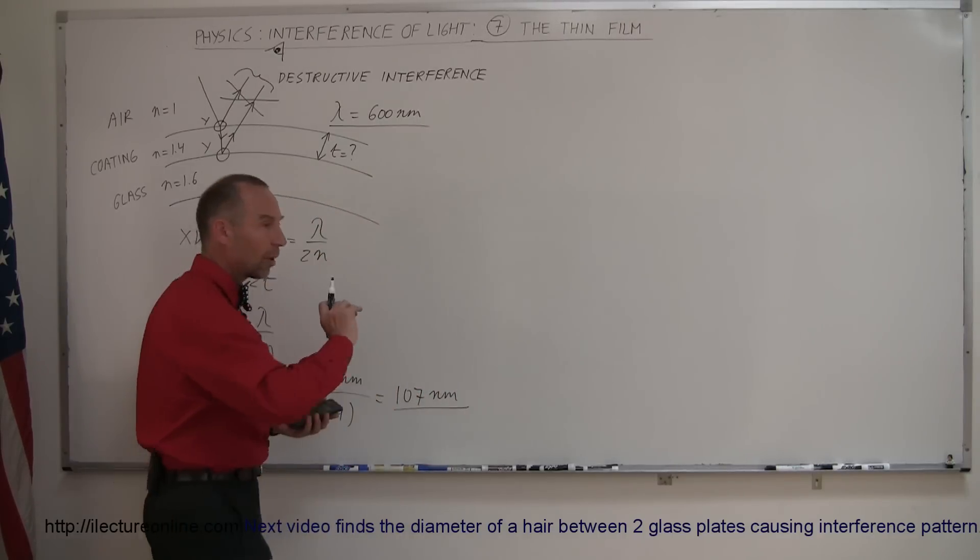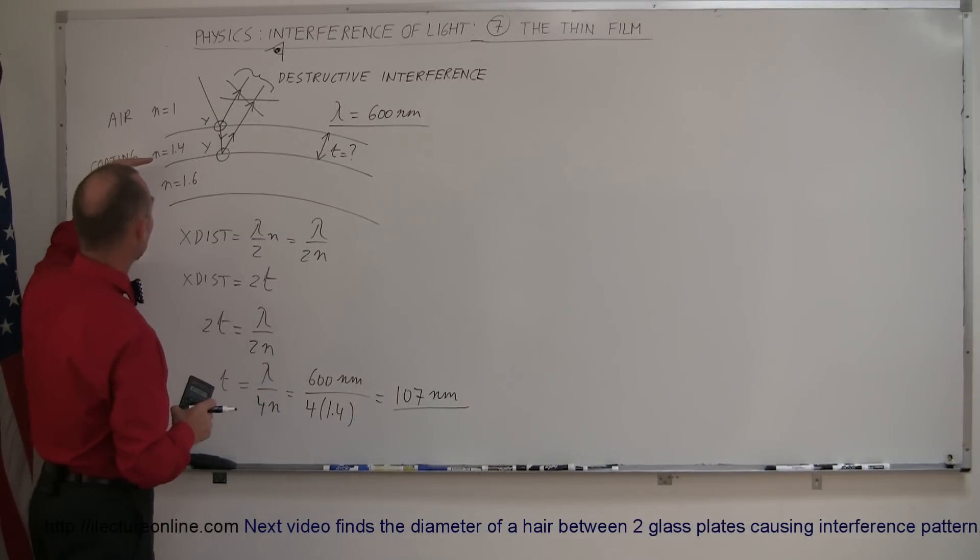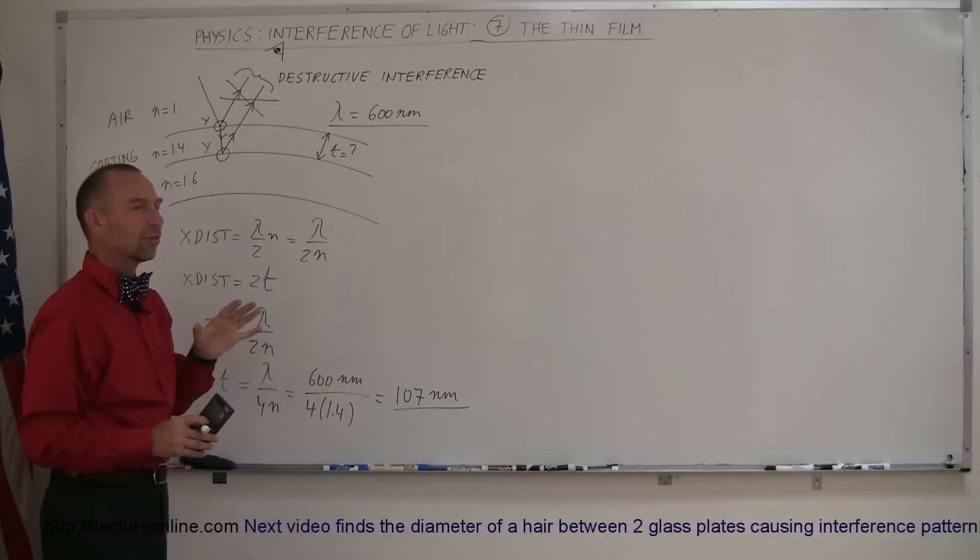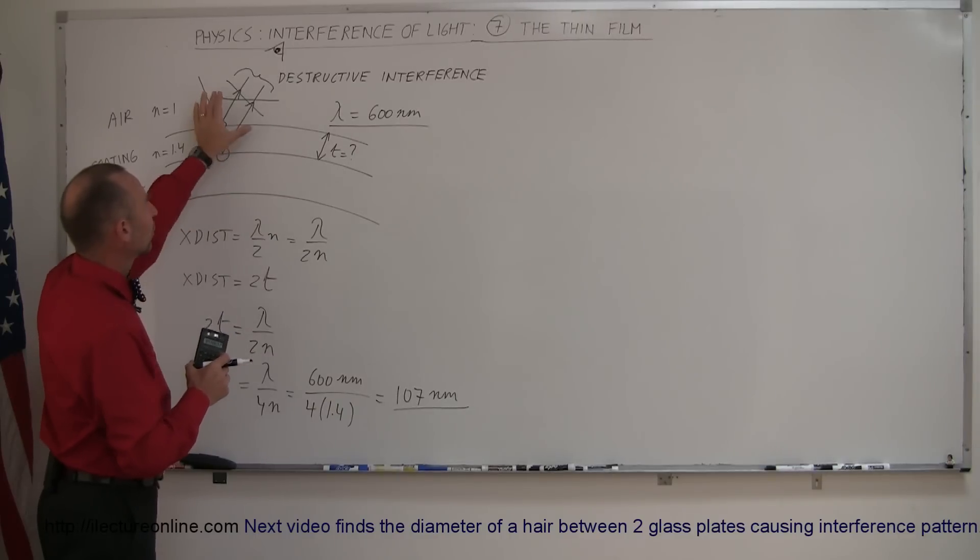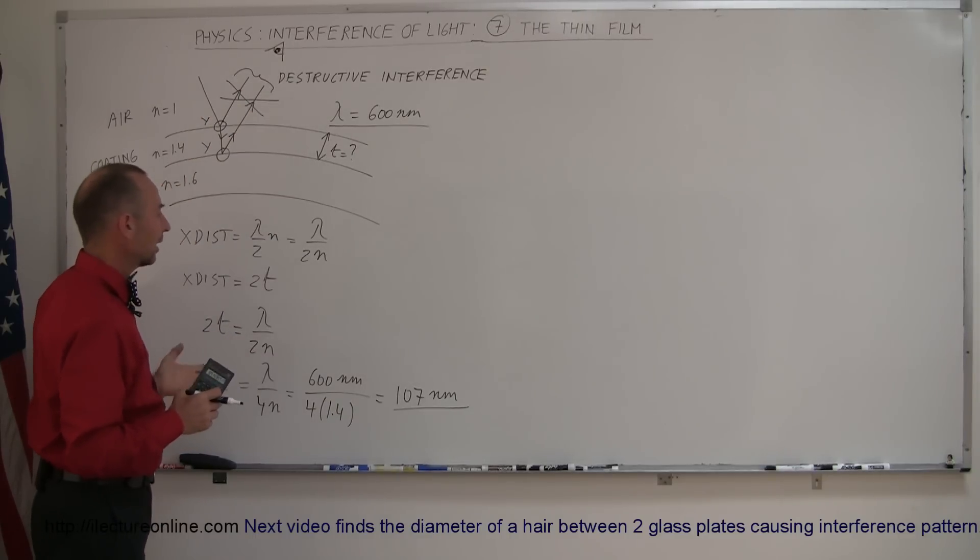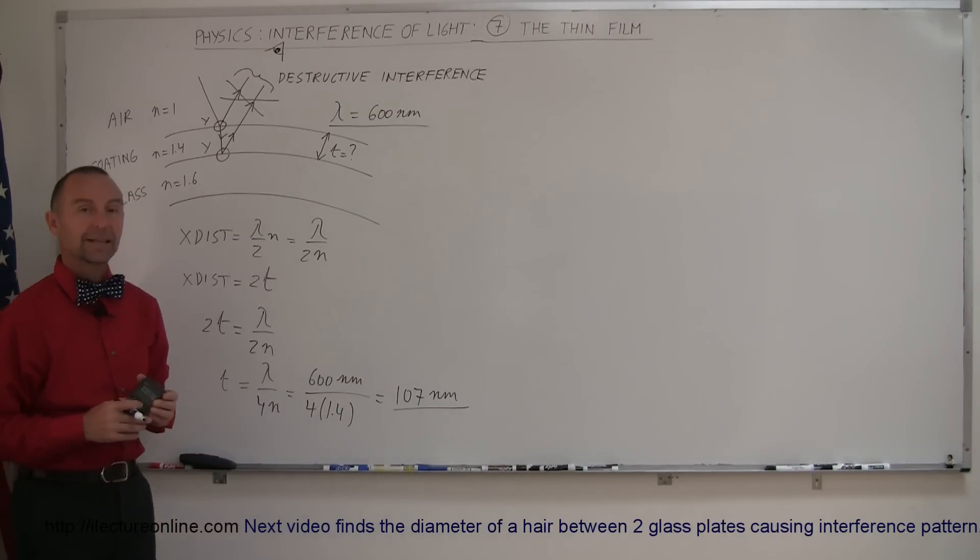So what you want to do then is put a small coating on top of the lens, make it equal to 107 nanometers. If the index of refraction is 1.4, it will cause all the light of the 600 nanometer range, which is a yellowish-orange-reddish color, to be primarily transmitted and not reflected back. That would be the optimum case for a telescope or binoculars you want to use for night vision, and that's how you do that.